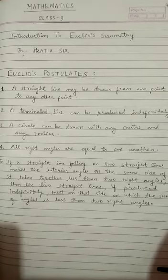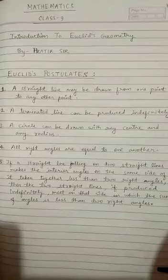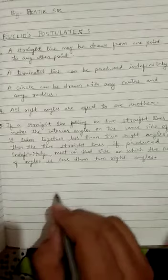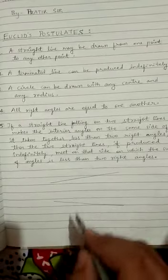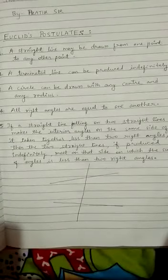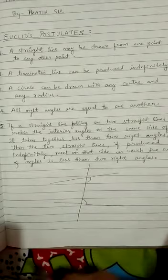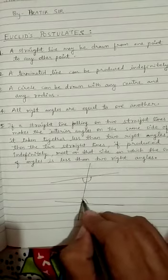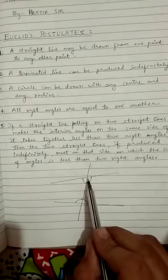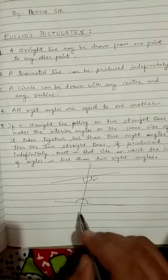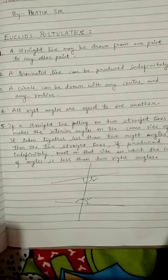The fifth postulate is a little big. Suppose there are two straight lines and a straight line is falling on those two straight lines. In this case, two interior angles are formed. According to the fifth postulate, one angle will be more than 90 degrees and similarly the other will also be more than 90 degrees, meaning both these angles are obtuse angles.